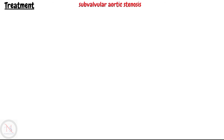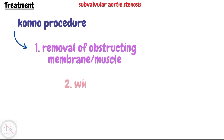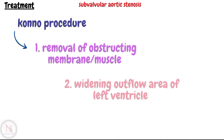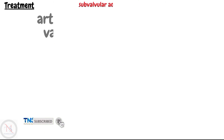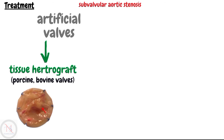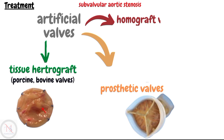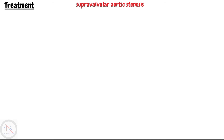In subvalvular aortic stenosis, surgery is done to remove the obstructing membrane or fibrous ring below the aortic valve. This is accomplished by the Konno procedure, which involves removing obstructing muscles, widening the outflow area of the left ventricle, and replacing the aortic valve with an artificial valve. The artificial valve used may be a tissue heterograft valve such as porcine or bovine pericardium valves, prosthetic valves, or homograft valves such as human donor valves.